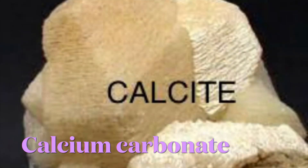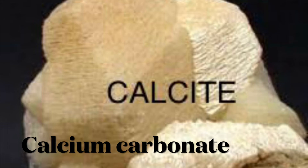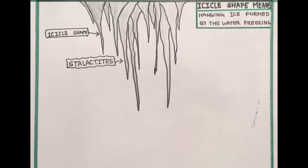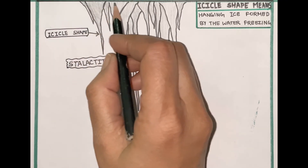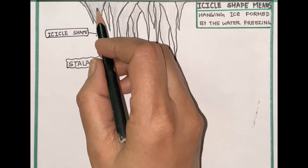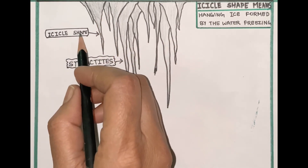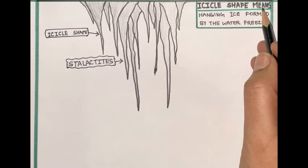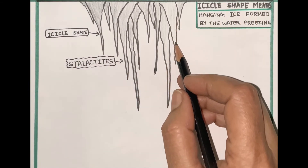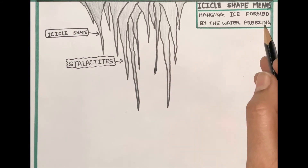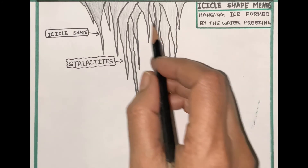Calcite, a mineral consisting of calcium carbonate, is an important component of limestone which dissolves when water drips into the caves. This dripping water leaves behind traces of calcite on the roofs of the caves. These deposits slowly build up in an icicle-shaped formation — meaning a hanging ice-like shape — and are known as stalactites.